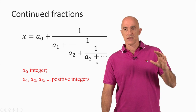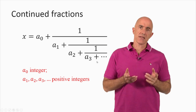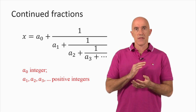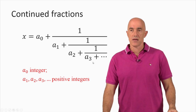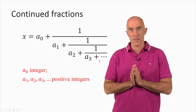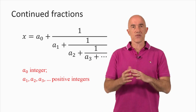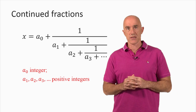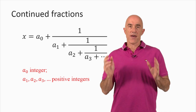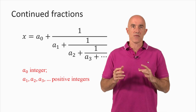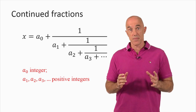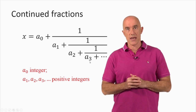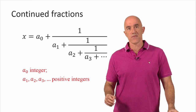If x is a rational number — an integer divided by an integer — then the continued fraction is finite; it gets truncated at some a sub n. That continued fraction can then be simplified into the rational number x, an integer divided by an integer. If x is irrational, meaning it cannot be written as an integer divided by an integer, then there are an infinite number of these integer a's, and all together they converge to x.